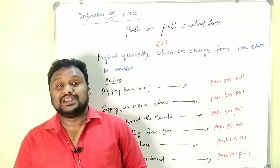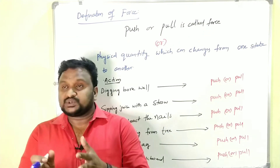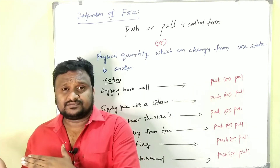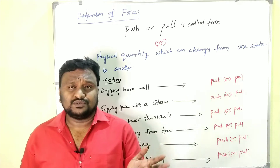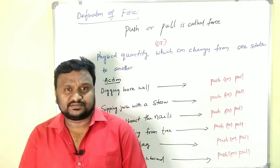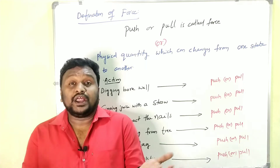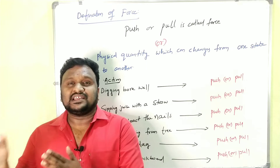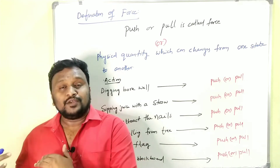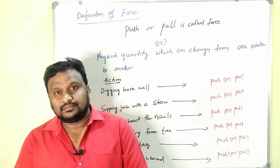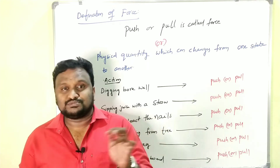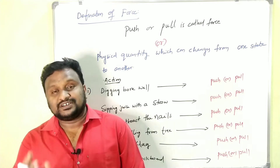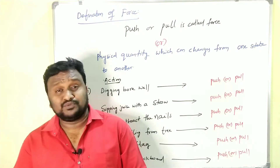I will explain all the content in a very expressive manner with simple examples — so watch the video without any skip. Now the definition of force. The first question should be like this: Push or pull is called dash. Options: force, momentum, velocity, none of these. And dash is the quantity that can change a body from one state to another — options: force, momentum, velocity, acceleration. What do you have to select? We need to know the definition of force.